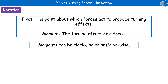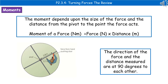When we're talking about moments, they can be either clockwise or anticlockwise. When we come to actually calculate the moment, it's going to depend upon the size of the force and the distance from the force to the pivot. The calculation we need to carry out is: moment of a force equals force times distance.